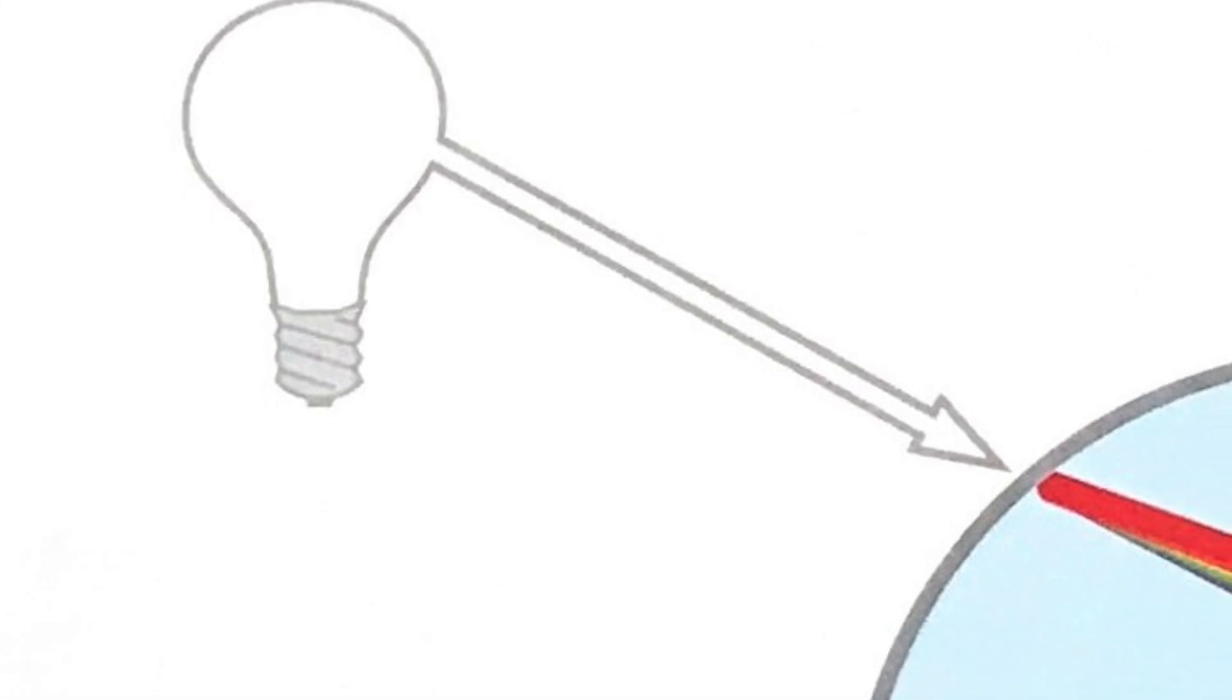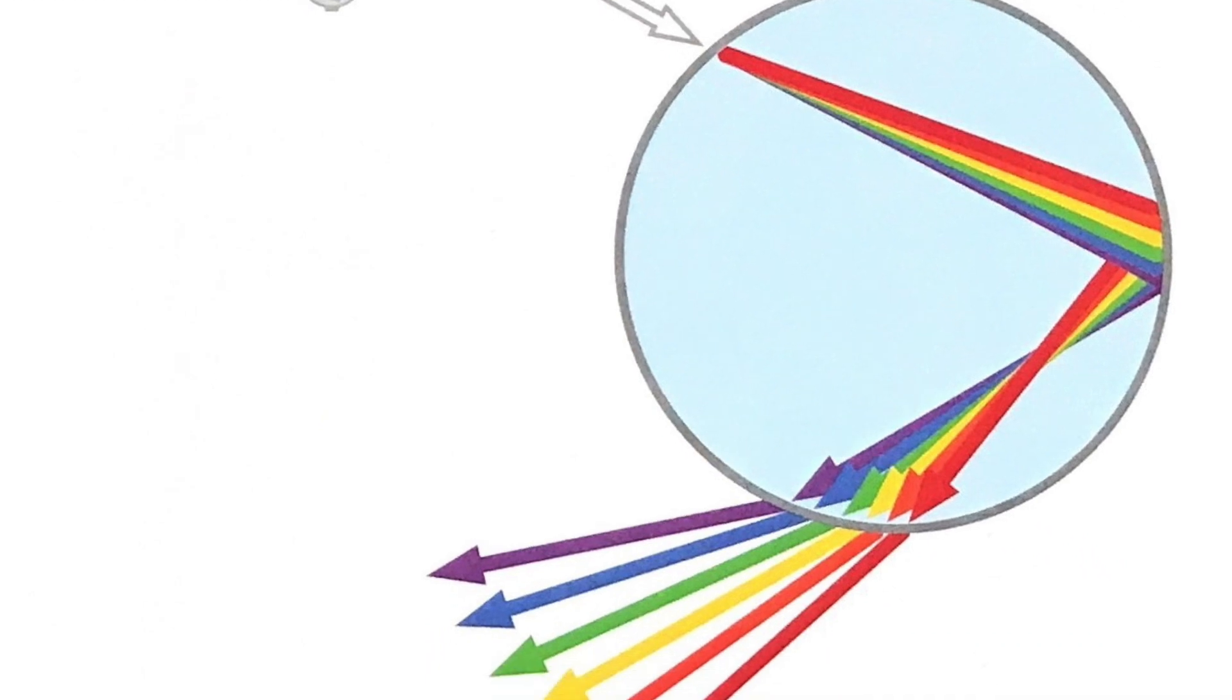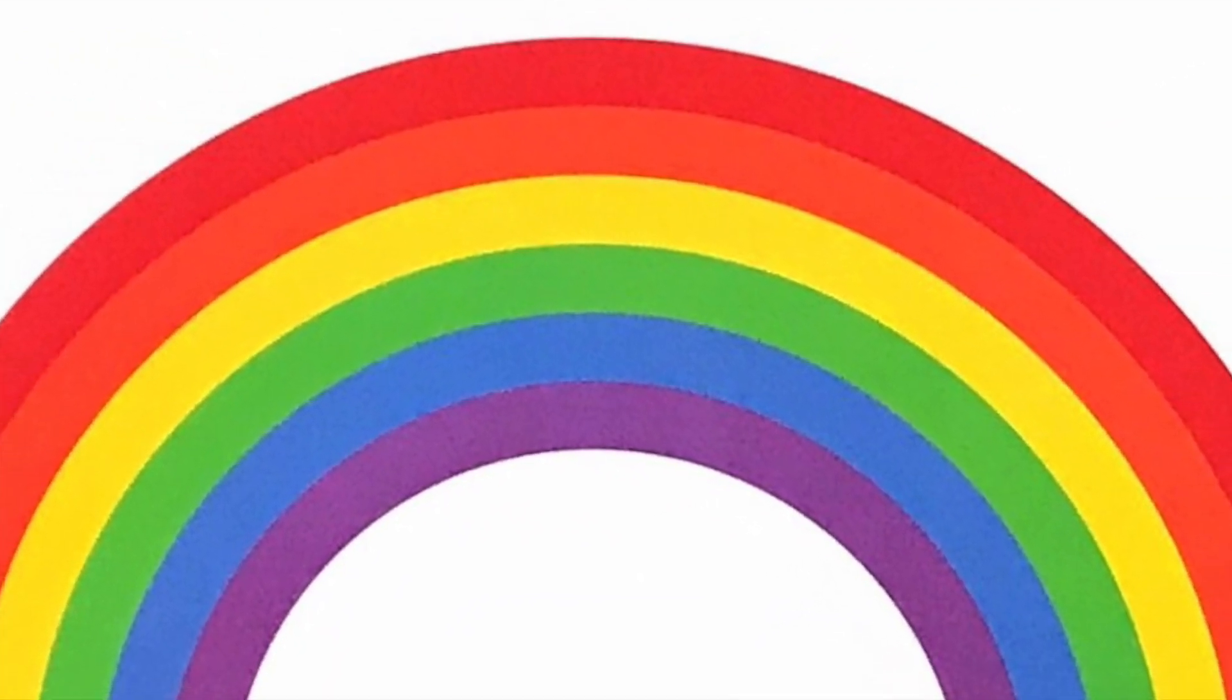If white light hits a raindrop, out comes a rainbow. On a sunny rainy day, you might see a rainbow in the sky like this.